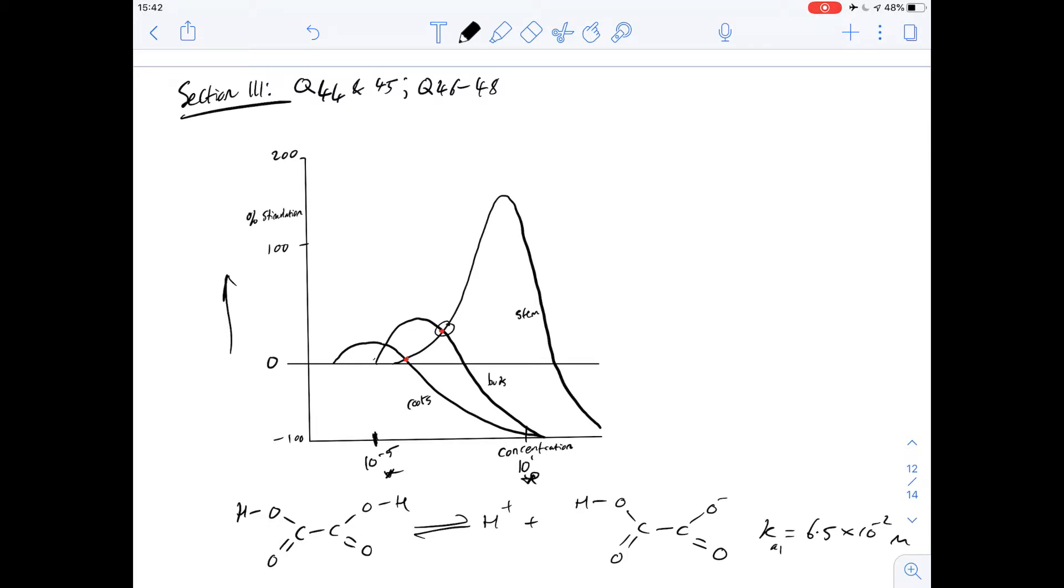For B we can use the same logic to work out that the stem and root stimulation are only equal once here and then finally for C there are two auxin concentrations at which bud and root stimulation are equal to each other and we can see here it only happens once. So that means that the answer for number 44 has to be D, that there is only one concentration for each pair of organs at which the two organs are equally stimulated.